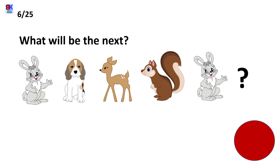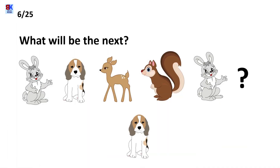Sixth question is: what will be the next in the pattern? We have the rabbit, the dog, deer, squirrel, again the rabbit — so the next one would be the dog. This was very easy; I'm sure you must have got it correct!